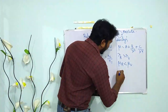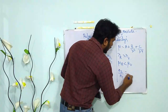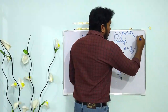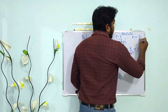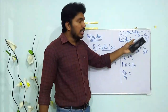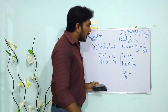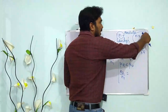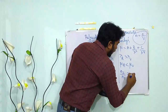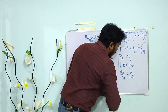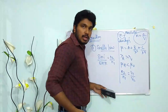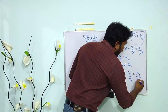The absolute refractive index n is equal to c/v, where c is the speed of light in vacuum and v is the speed in that medium. So n2/n1 corresponds to v1/v2, which is also equal to λ1/λ2.